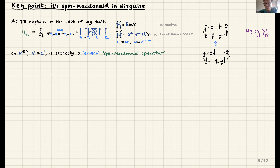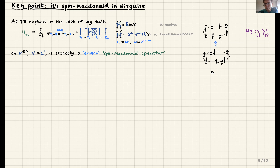The main point is that what I've been talking about is really a spin version of McDonald theory in disguise. The same operator is a frozen version of what I'll call a spin McDonald operator. The physical picture is: the spin chain has atoms equally spaced on a circle with interacting spins. The more general spin McDonald-Ruijsenaars theory describes the same particles but now also with a coordinate so they can move around the circle — a quantum many-body integrable system.